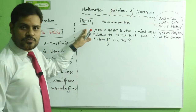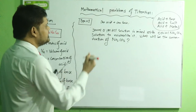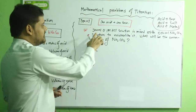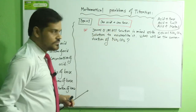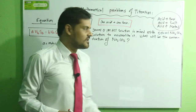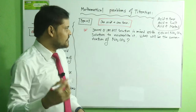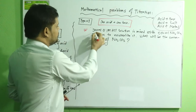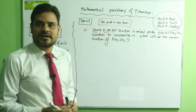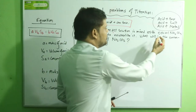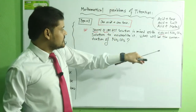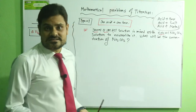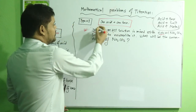This is Type 1 — when one acid reacts with one base. The problem states: 300 mL of 0.1 molar HCl solution is mixed with 500 mL sodium carbonate solution to neutralize it. What will be the concentration of the sodium carbonate? The volume and concentration are given for HCl, and the volume for sodium carbonate is given, so the concentration of sodium carbonate is the targeted value.